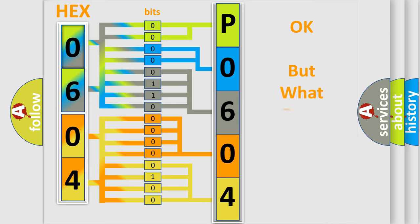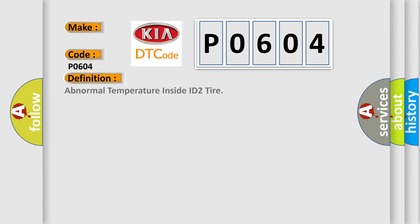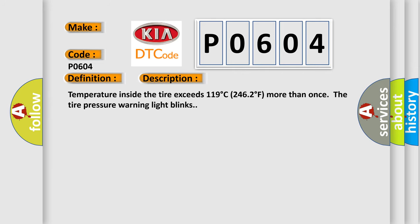We now know in what way the diagnostic tool translates the received information into a more comprehensible format. The number itself does not make sense to us if we cannot assign information about what it actually expresses. So, what does the Diagnostic Trouble Code P0604 interpret specifically for Kia car manufacturers? The basic definition is: Abnormal temperature inside ID2 tyre. Temperature inside the tyre exceeds 119 degrees Celsius (246.2 degrees Fahrenheit). More than once, the tyre pressure warning light blinks.